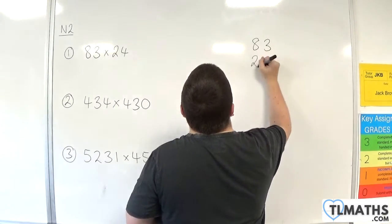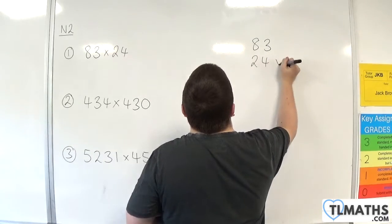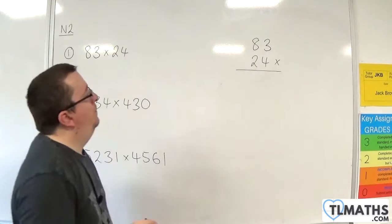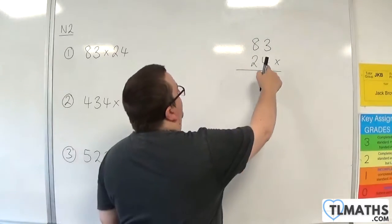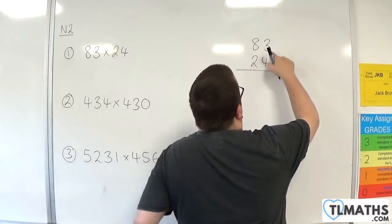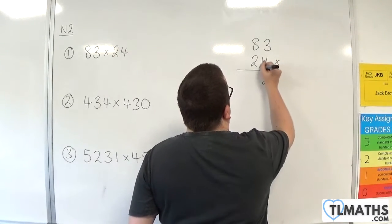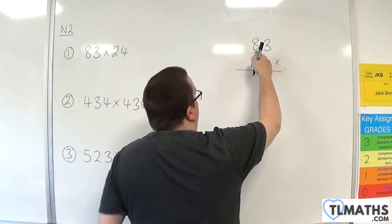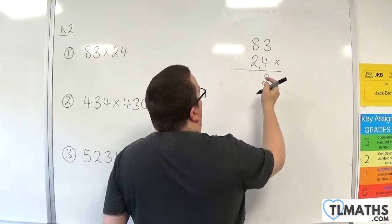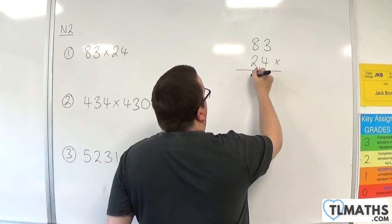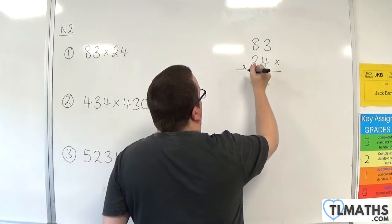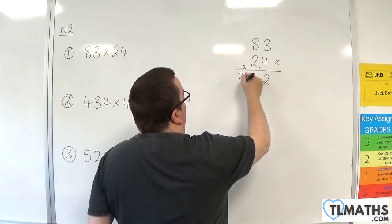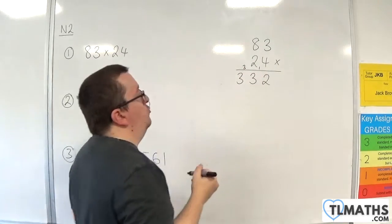So 83 times 24 — make sure the units and tens line up. We have 4 times 3, which is 12, so put down the 2, carry the 1. 4 times 8 is 32, add the 1 is 33. So we put the 3, carry the 3. And then you've got 4 times nothing plus the 3, so the 3 just drops down.